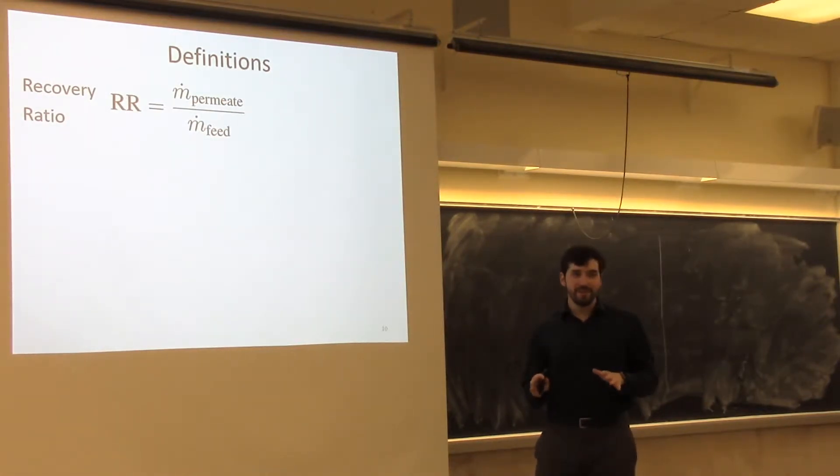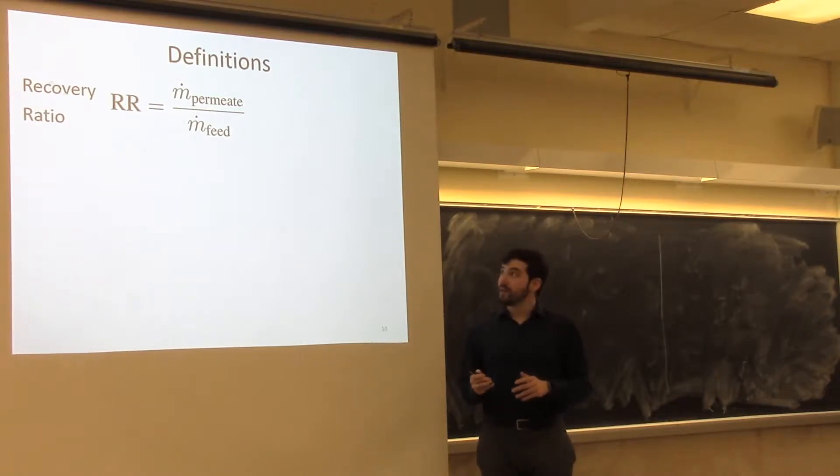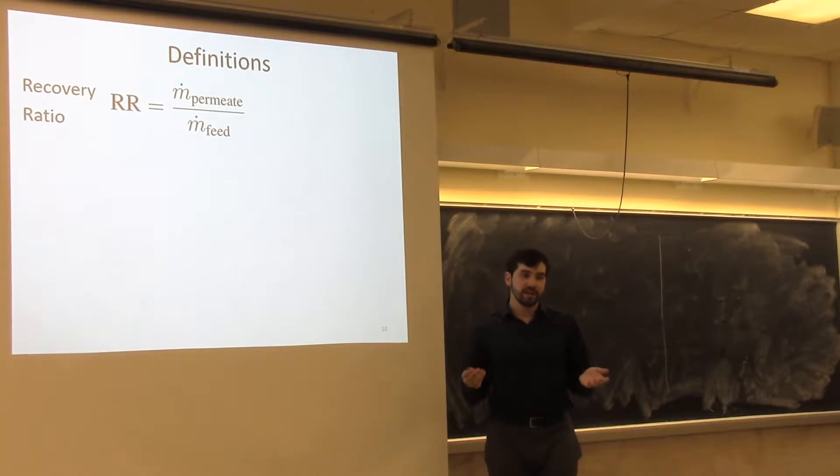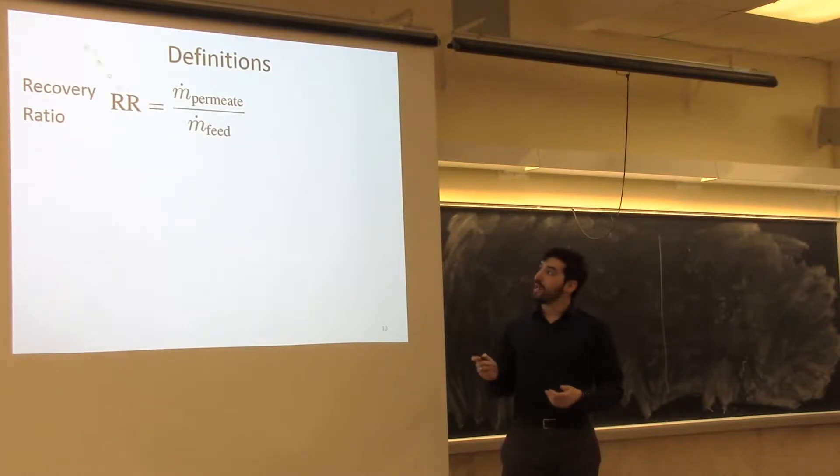I'll try to keep the equations to a minimum. There's two we really need to know. The first is the recovery ratio. Essentially, you can think of this as the fraction desalinating. It's a ratio of how much pure water you get out, the mass flow rate of the permeate, divided by your incoming mass flow rate of the feed. For instance, if your recovery ratio is 60%, that means your pure water stream is 60% the volume of the incoming feed water stream.